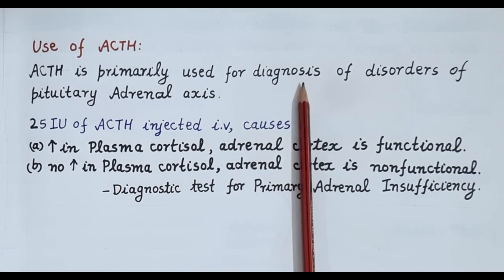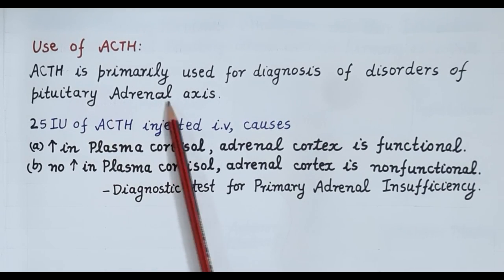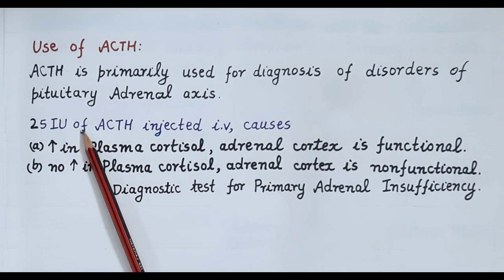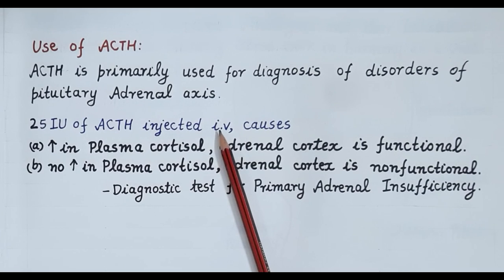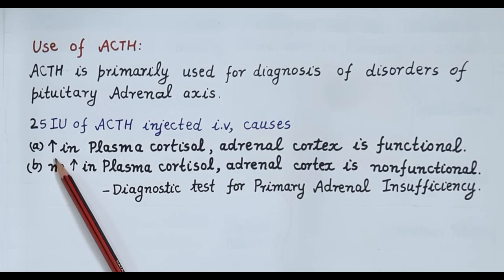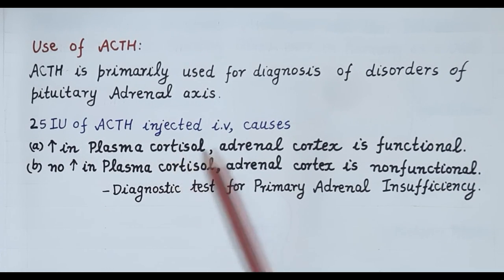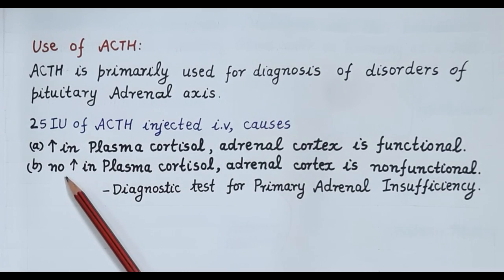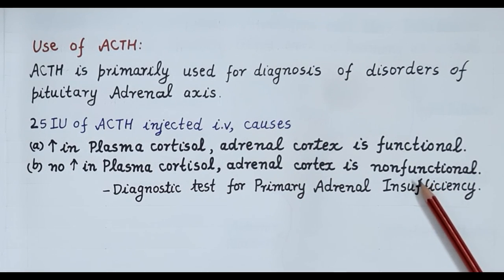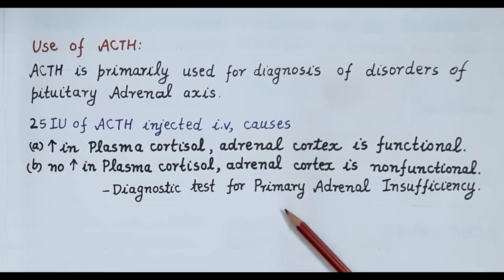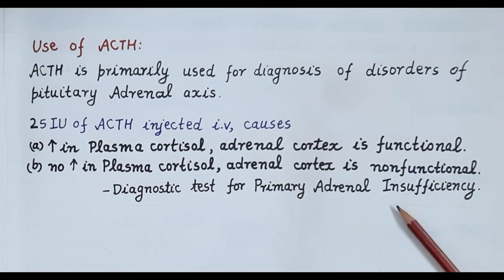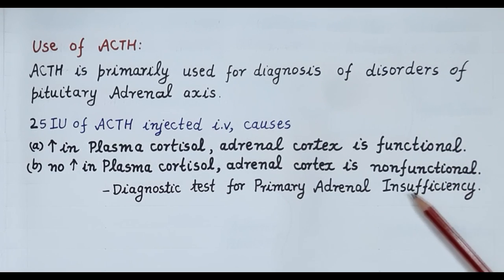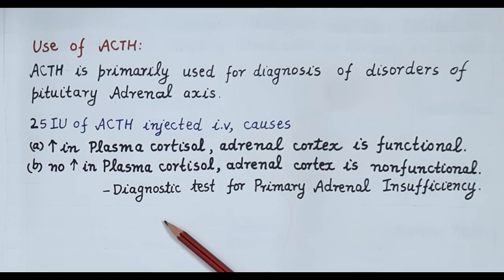Now let's understand the use of ACTH. ACTH is primarily used for diagnosis or identification of disorders of the pituitary-adrenal axis. 25 international units of ACTH is injected intravenously. Since ideally ACTH stimulates the adrenal cortex to release cortisol, if the levels of plasma cortisol rise, it indicates the adrenal cortex is functional. On the contrary, if cortisol levels do not rise, it indicates the adrenal cortex is non-functional. This ACTH test is a diagnostic test for primary adrenal insufficiency.